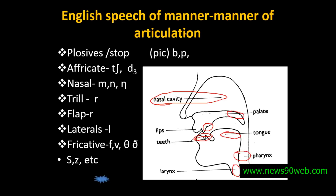Plosives — manner of articulation. Plosives mean the air is taken in and stopped, then released with a burst — exploded. They are called plosives. For example: pat, bat, backing, batted — these are plosives. The two lips block the air at the bilabial place and then release it.